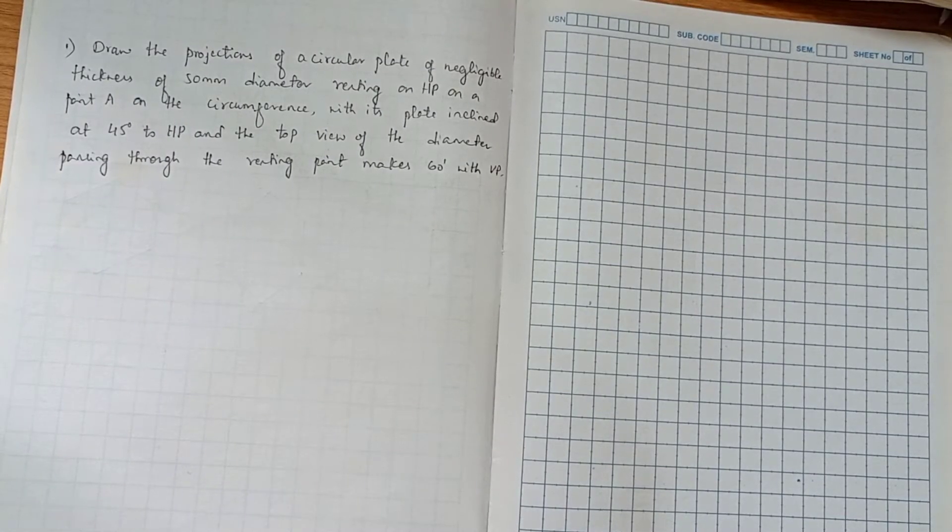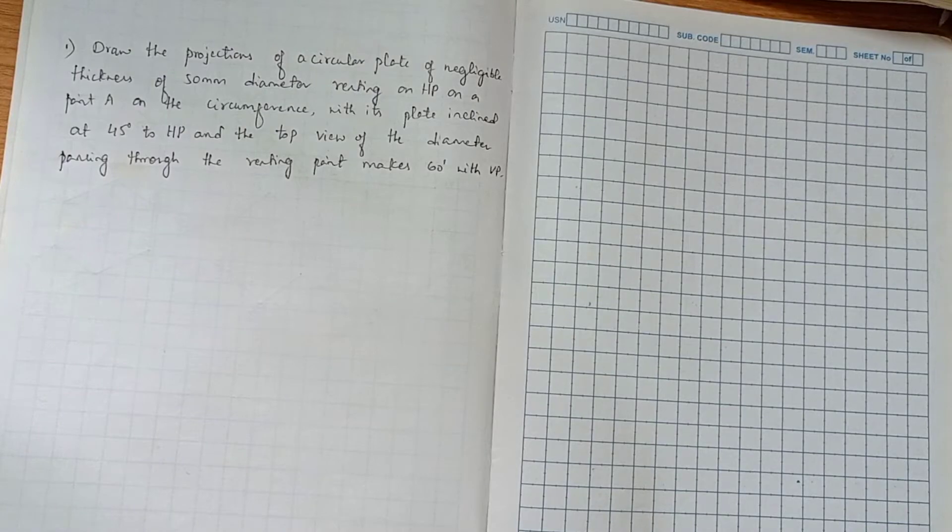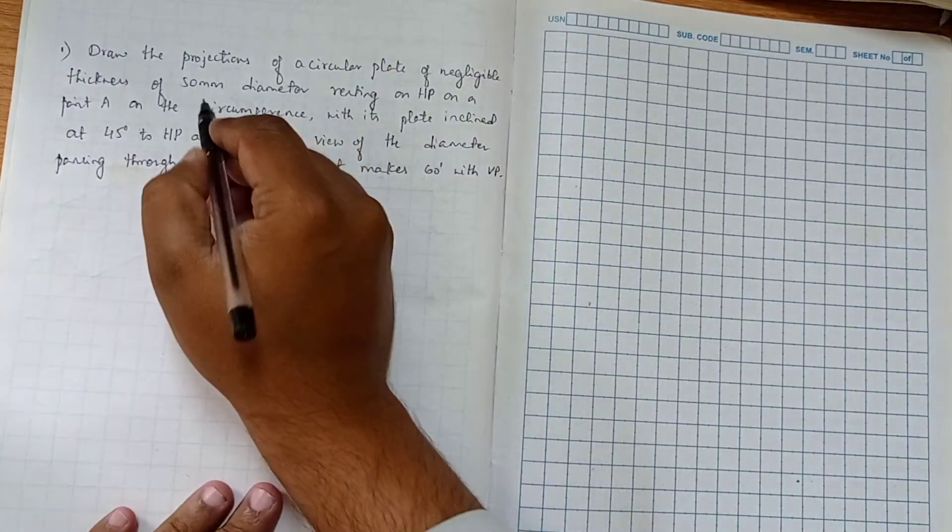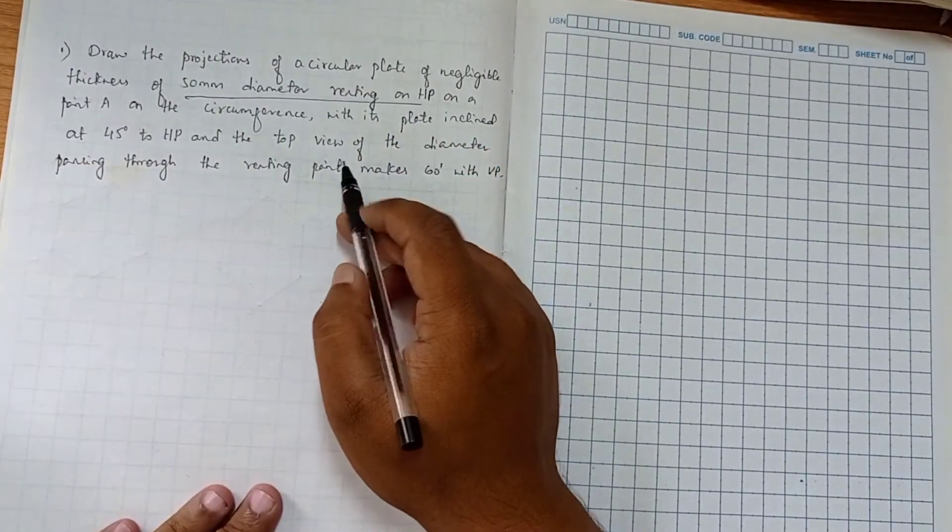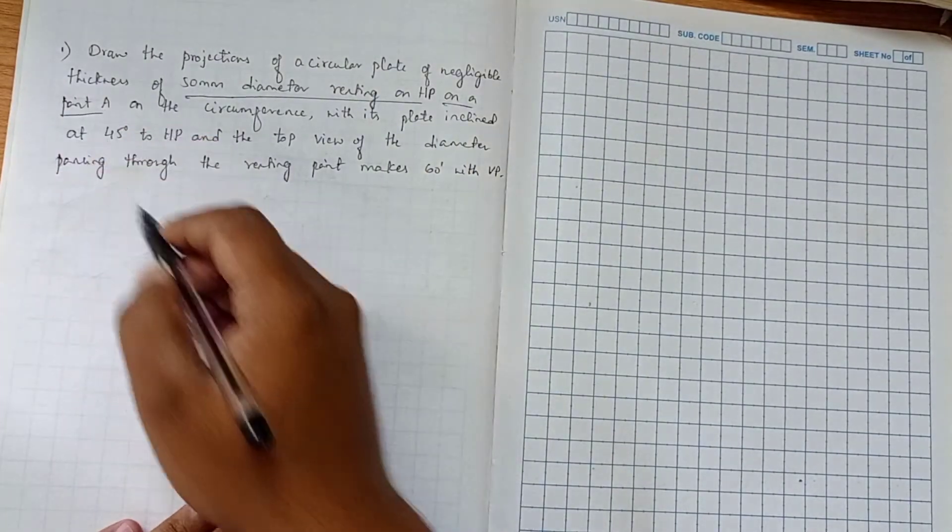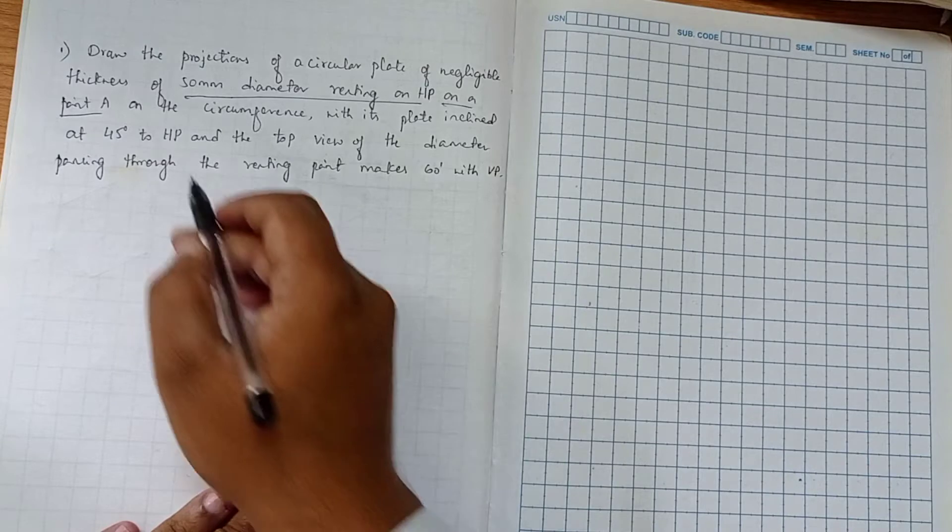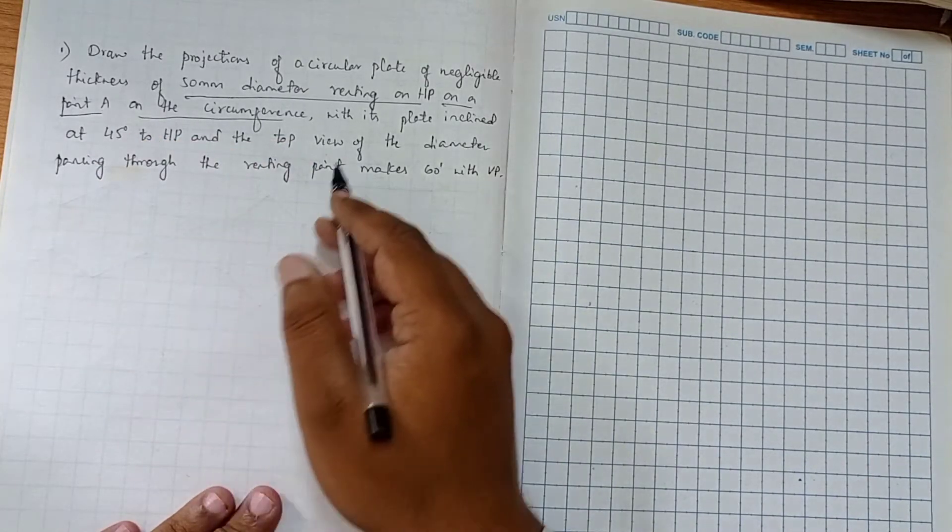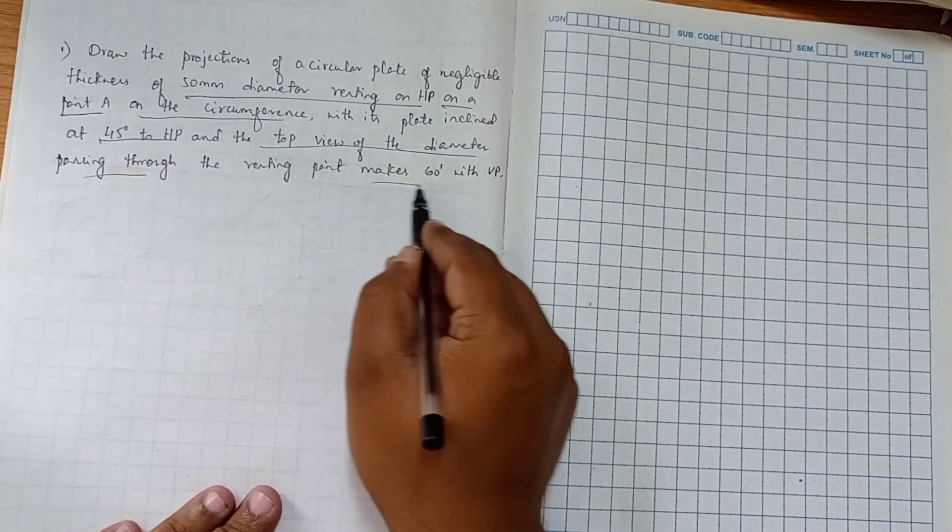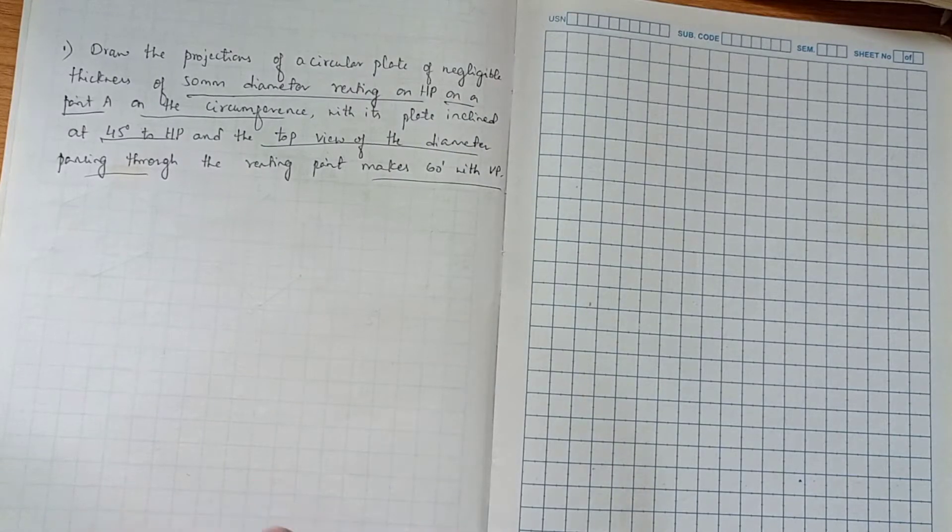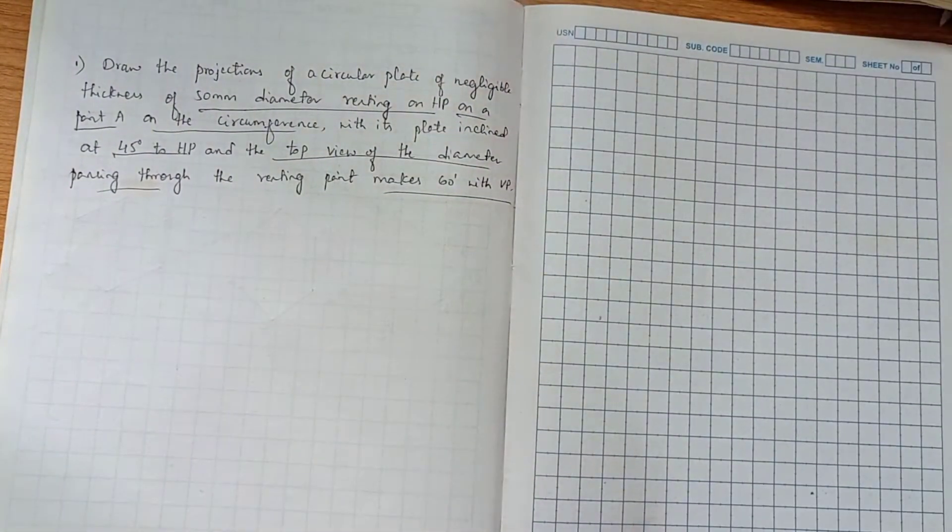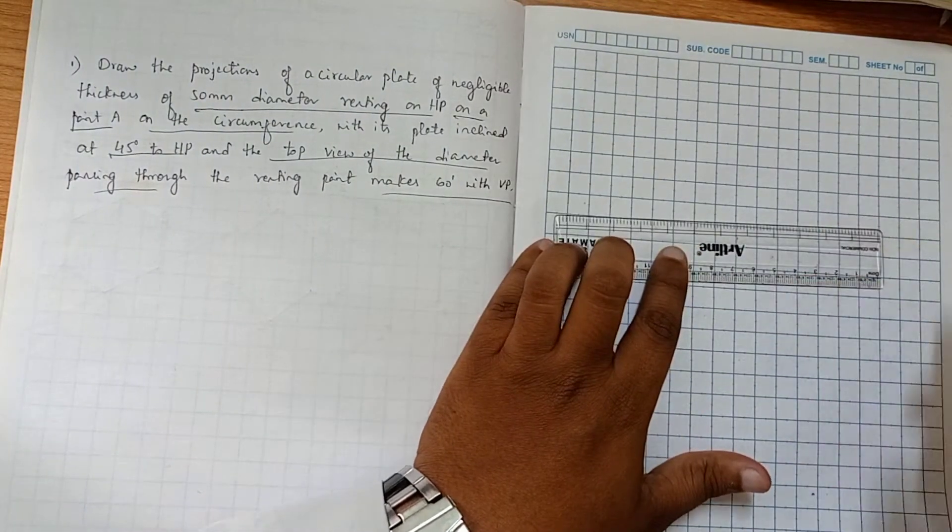Today we are going to start a problem on circular lamina. Draw the projections of a circular plate of negligible thickness, 50 mm diameter, resting on HP on a point A. With its plate inclined at 45 degrees to HP, and the top wave of the diameter passing through the resting point makes 60 degrees to VP. This is one of the normal type of problems.